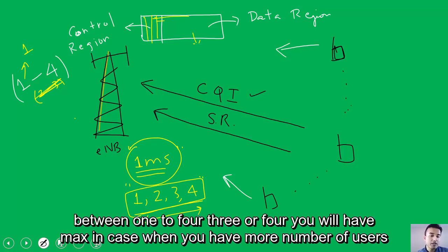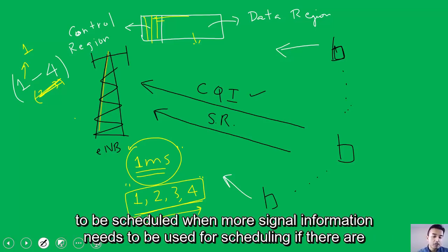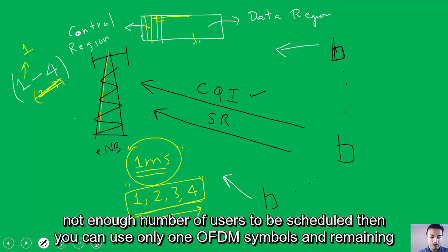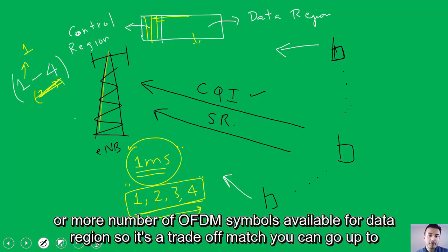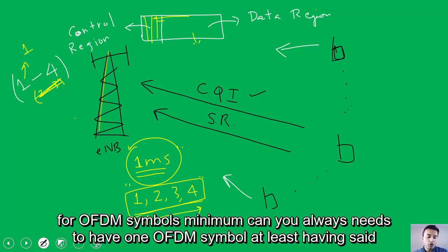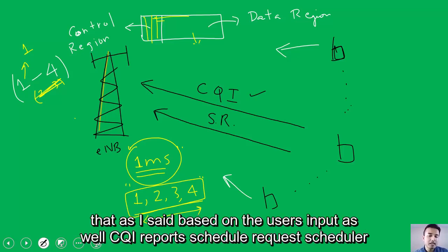Three or four OFDM symbols will be used when there are more users to schedule and more signaling information is needed. If there are fewer users to schedule, only one OFDM symbol is needed for control, and the remaining 13 OFDM symbols are available for the data region, giving more capacity for data. So it's a trade-off: maximum four OFDM symbols for control, minimum one. Based on users' CQI reports and scheduling requests, the scheduler makes its decision.